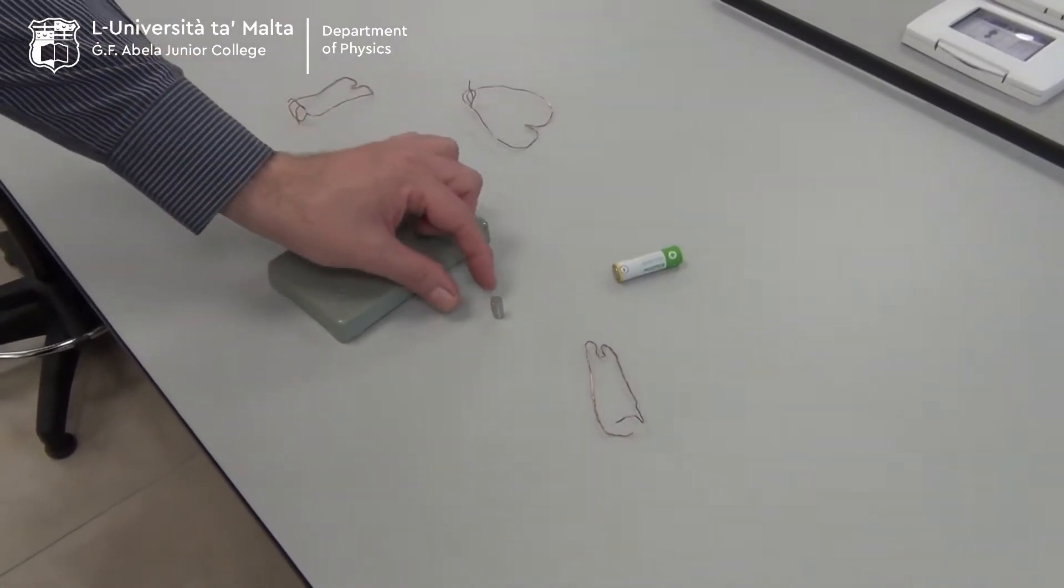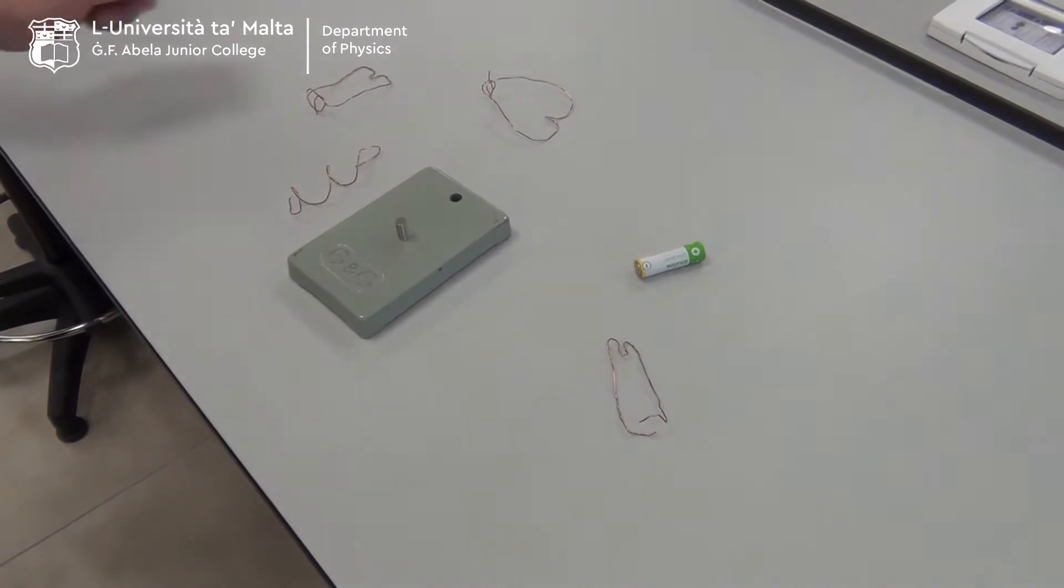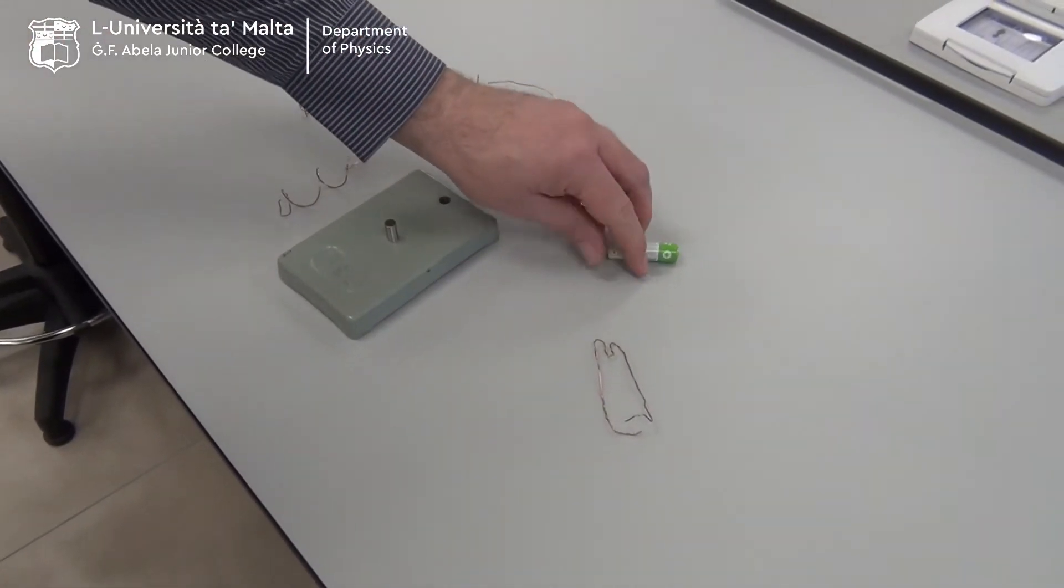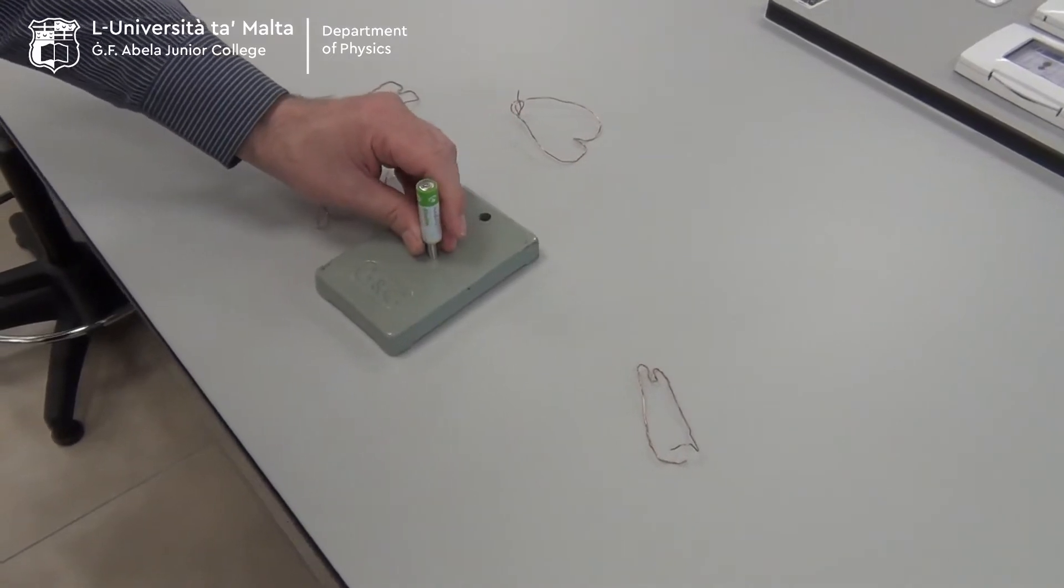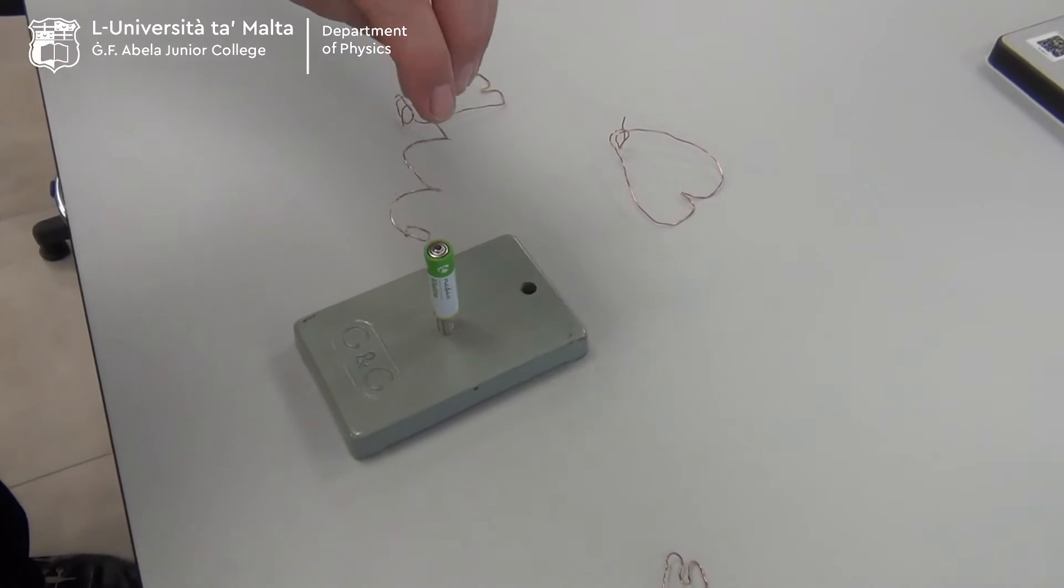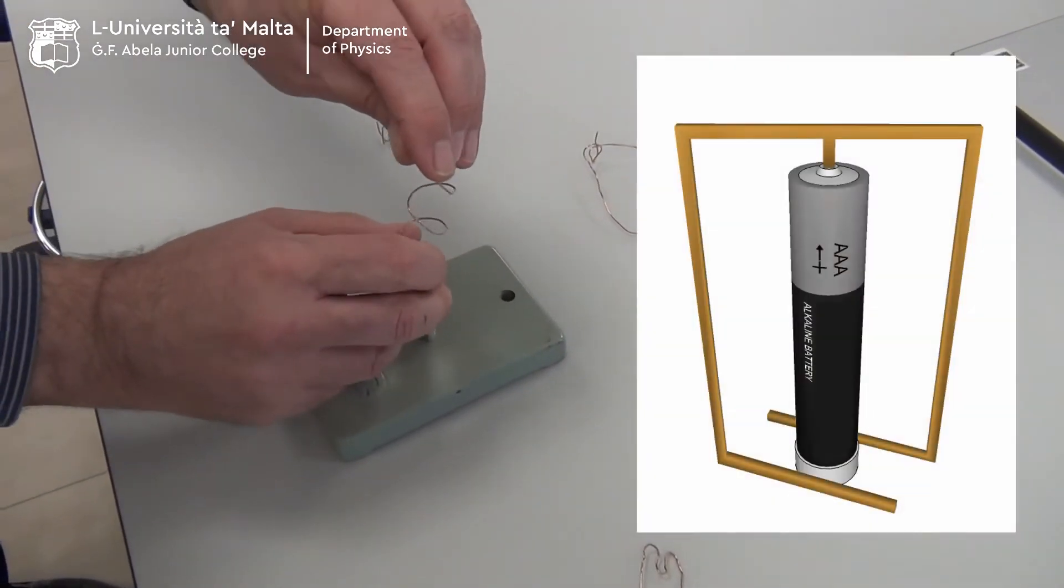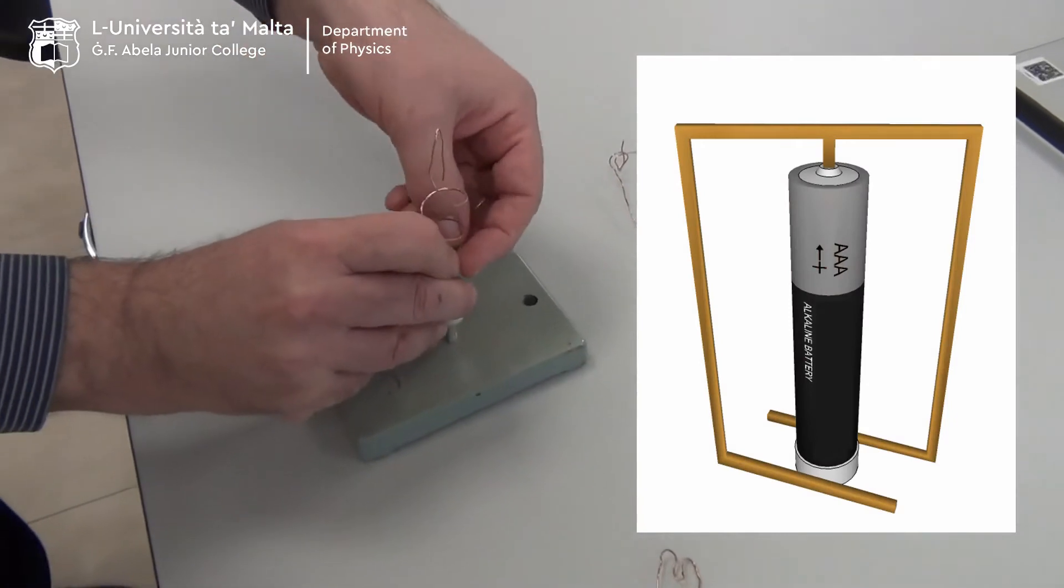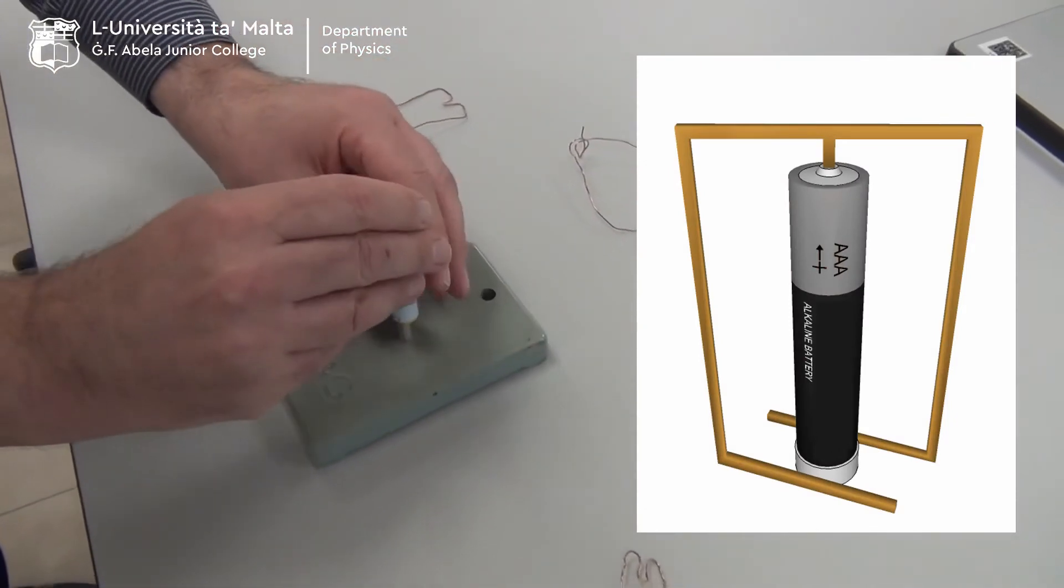To set up this DC motor, we use the magnets, we place them on a metal plate for rigidity, then the cell. And then we fix up a loop such that it will touch the positive side of the cell and the negative side of the same cell to complete the circuit.